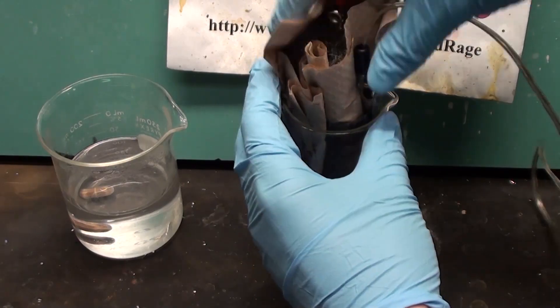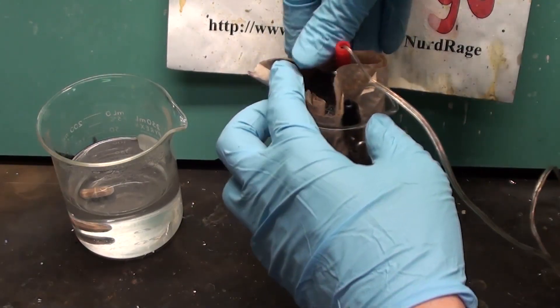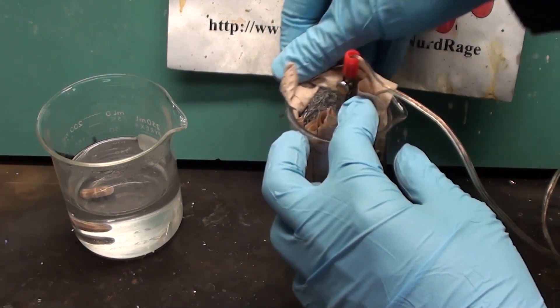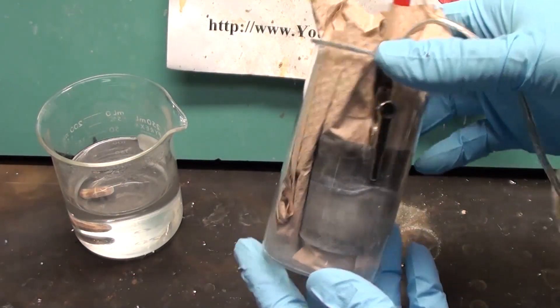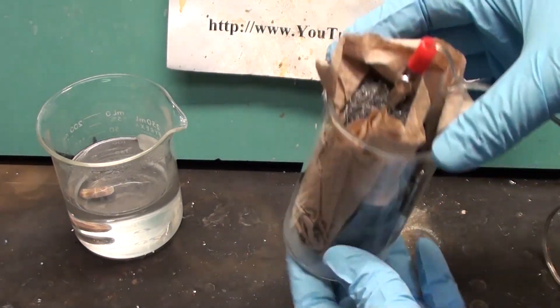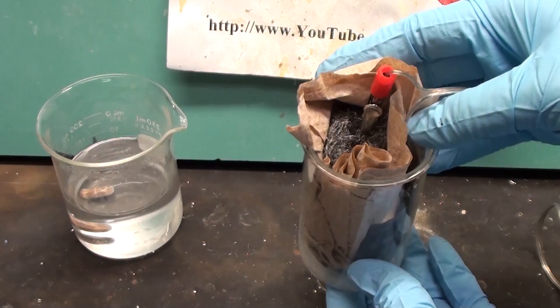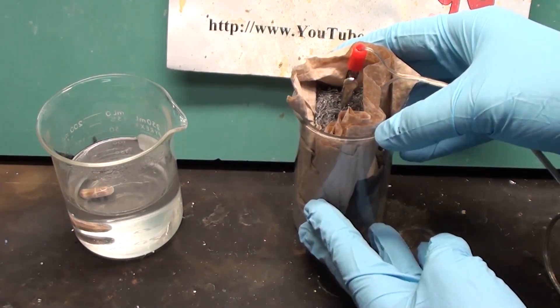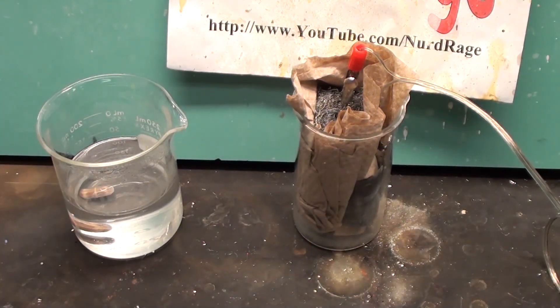Push the entire assembly into the container. Make sure the wool on top is exposed so air can get in. At this point this is known as a dry charged zinc air battery. It won't work until we add the electrolyte, but it can be stored for decades like this until you need it.